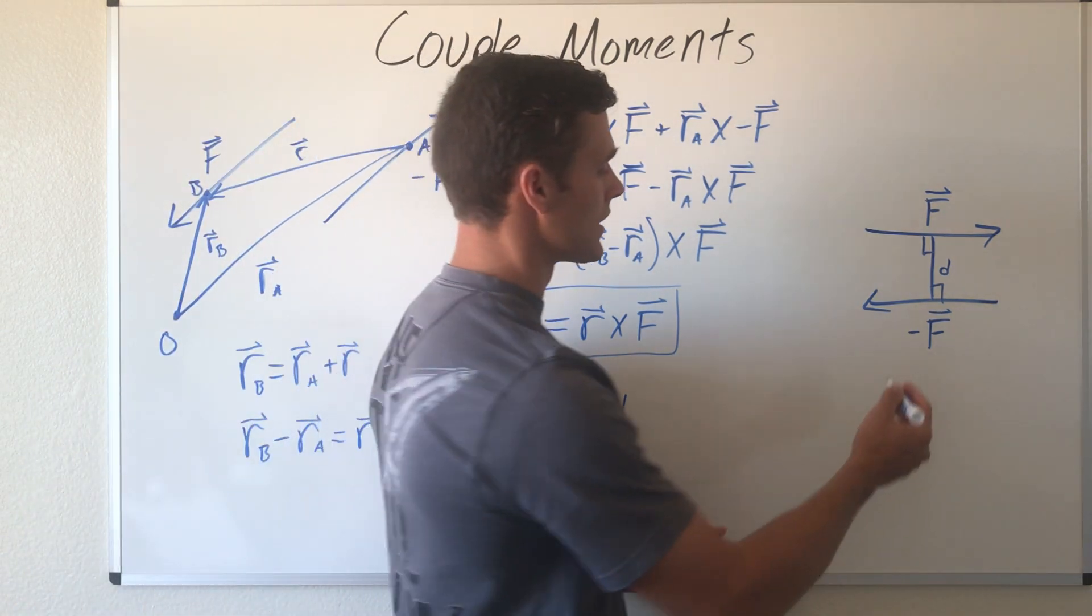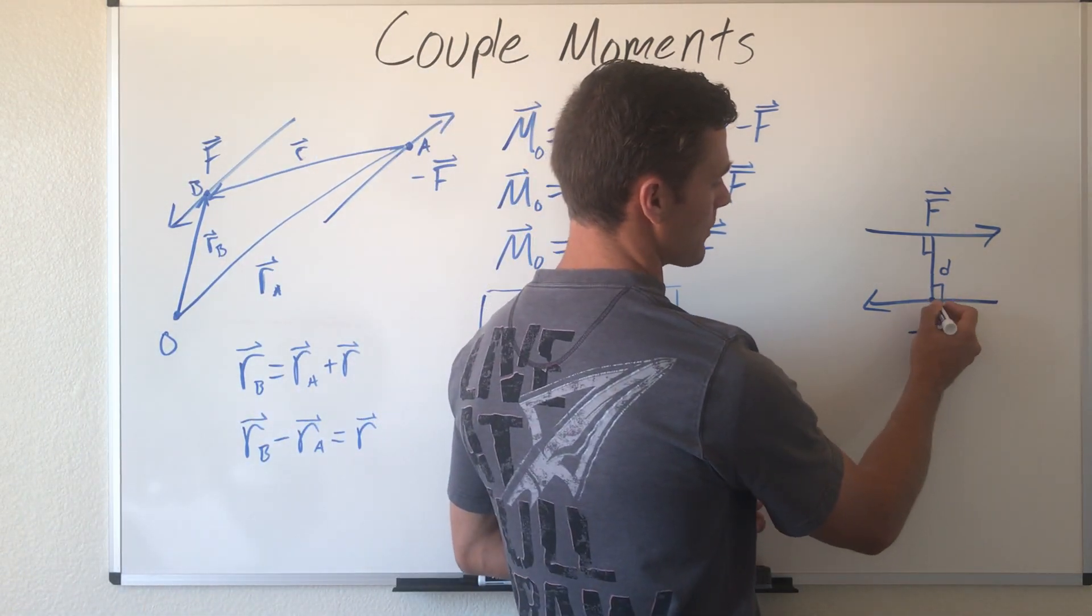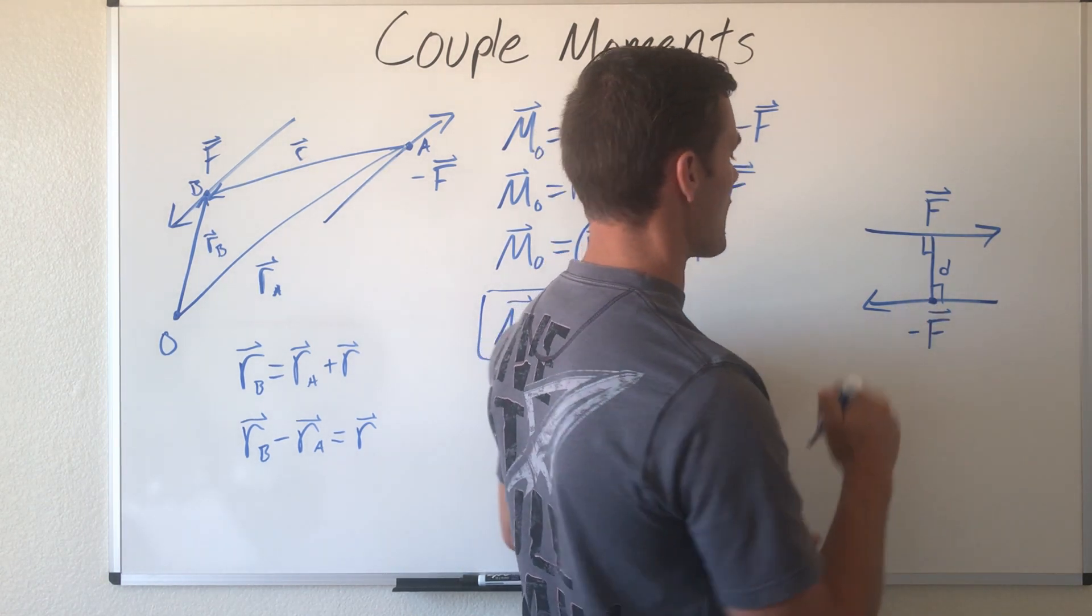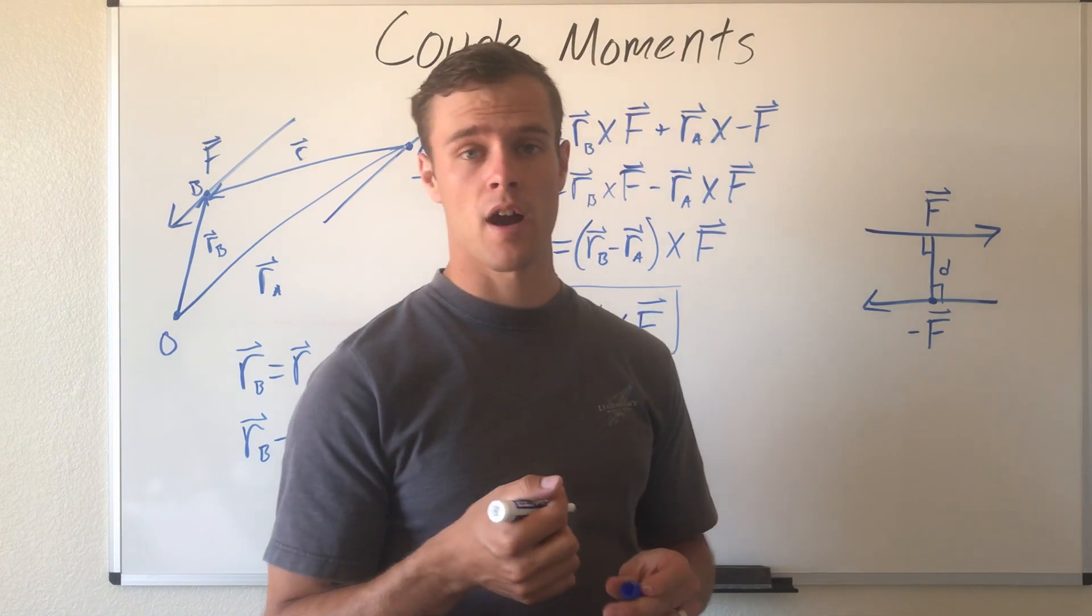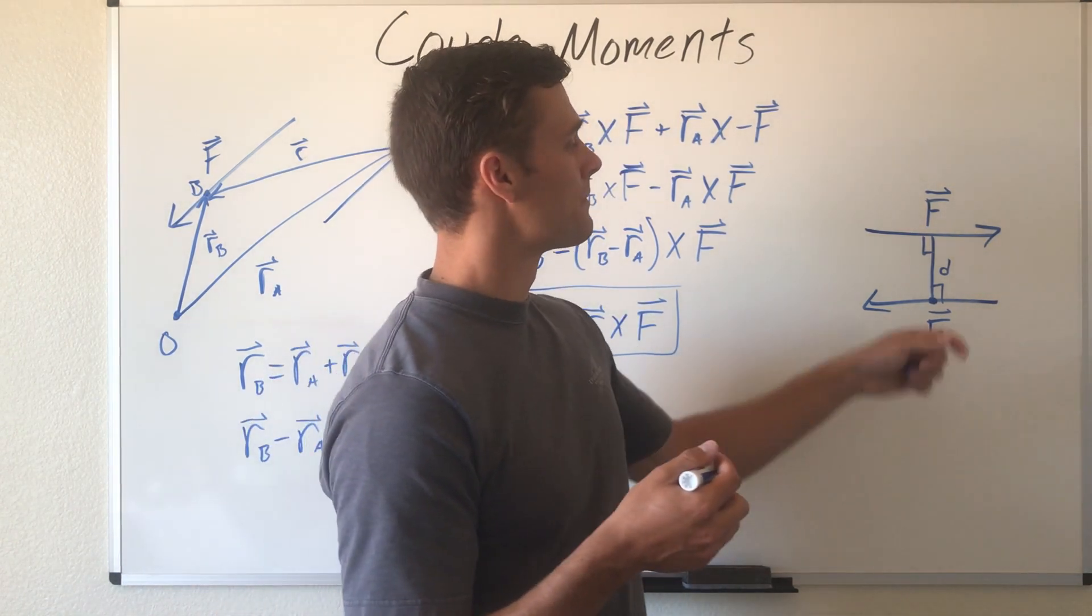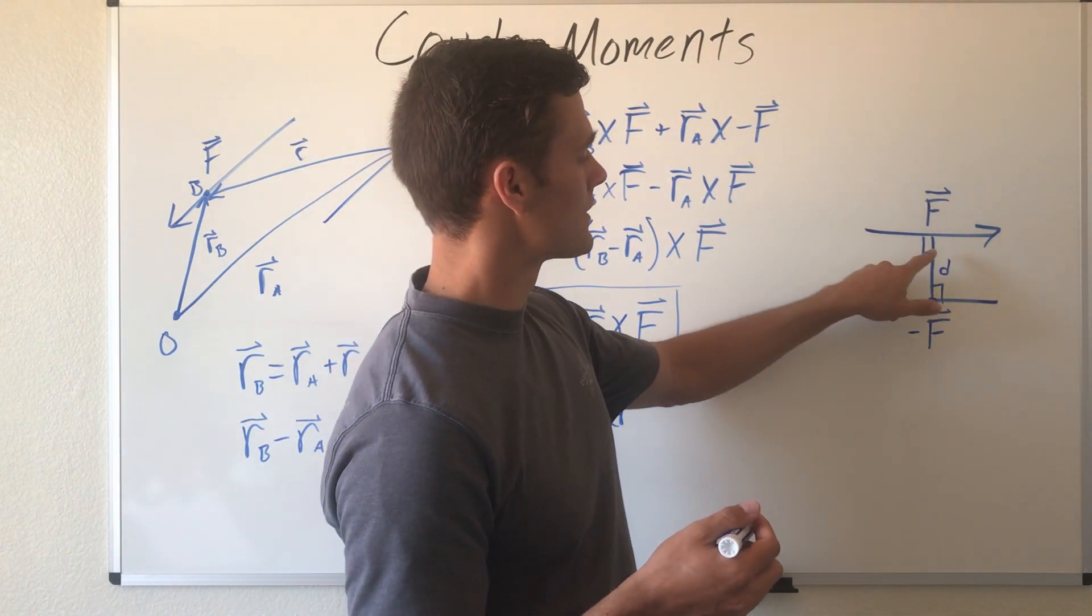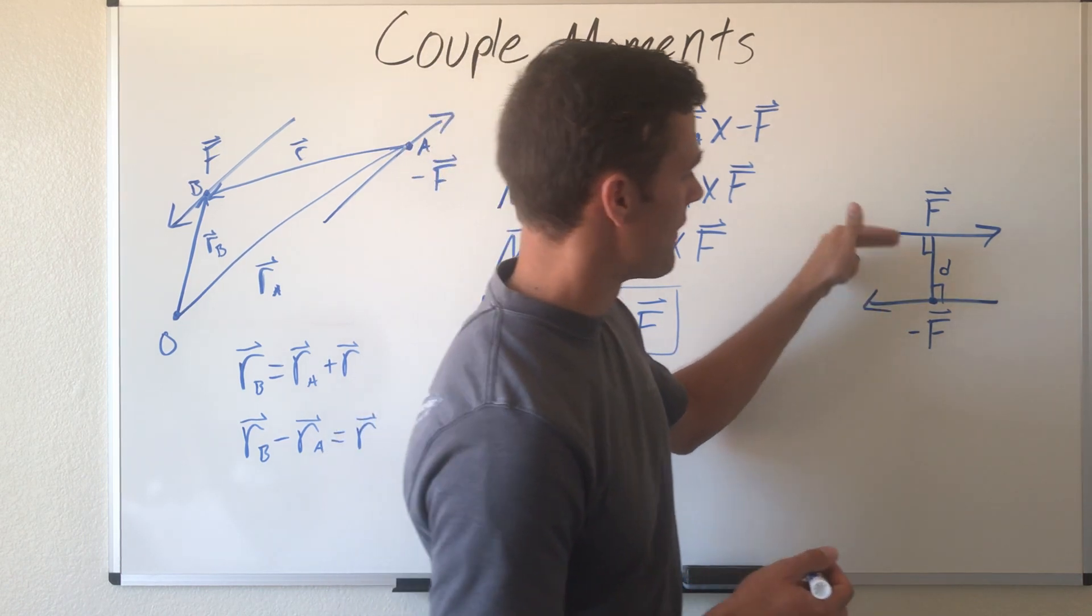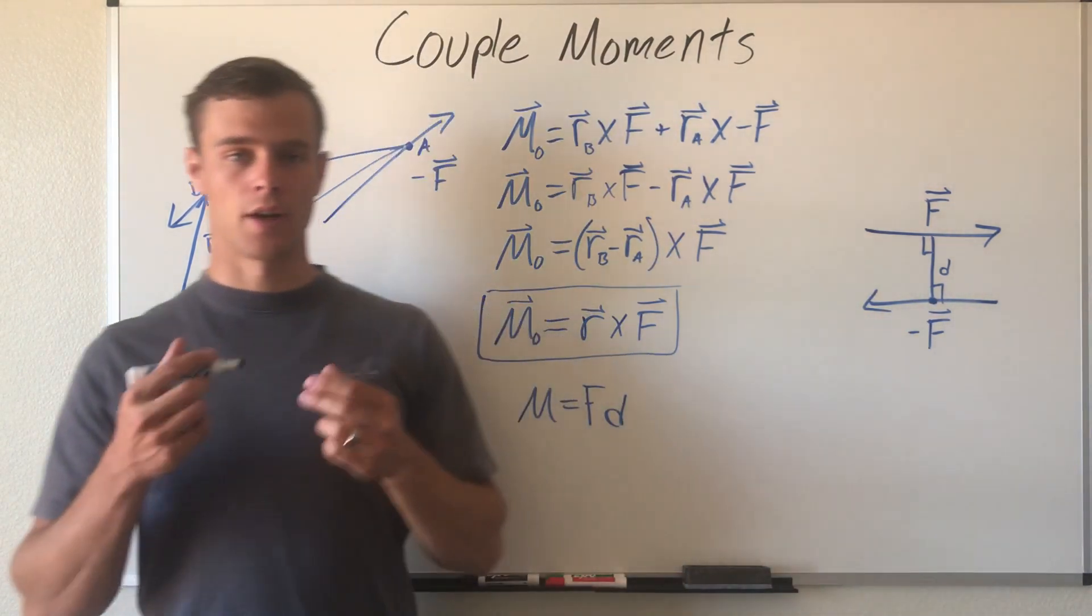Say if you're wanting to find the moment about this point here, because one of your forces is going through your axis of rotation it's not going to cause rotation there, but your other force is going to be perpendicular to your moment arm and that is going to be the magnitude of your force.